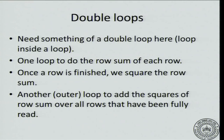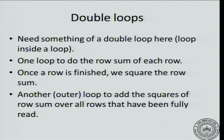The inner loop does what we did first: it takes a row and adds all the numbers in that row, then squares the result. So we need one loop to compute the row sum for each row. Once a row is finished, we square the row sum. Then we need an outer loop to add the squares of all the row sums together.